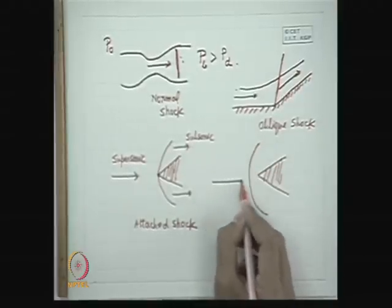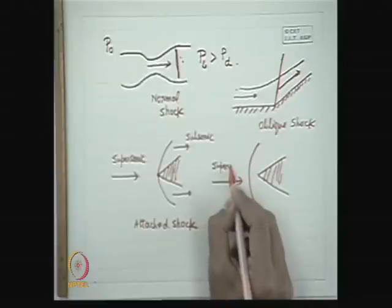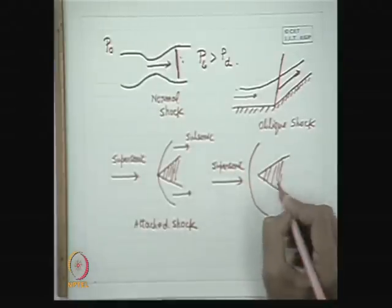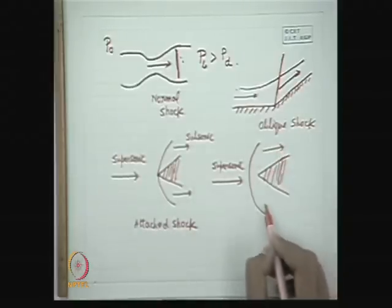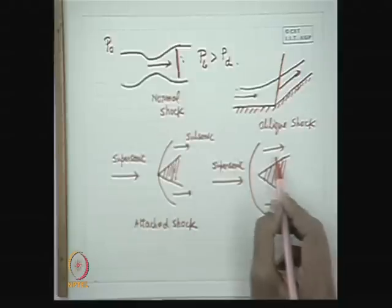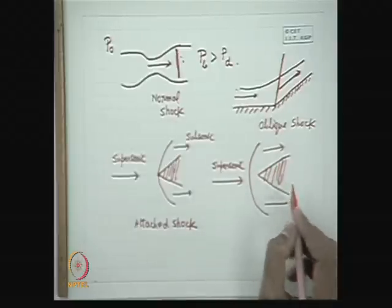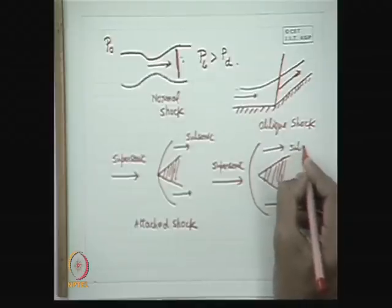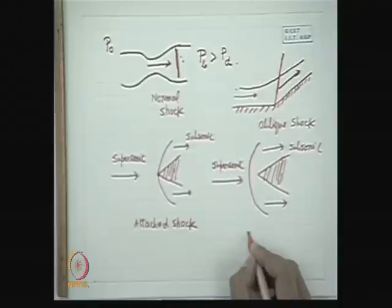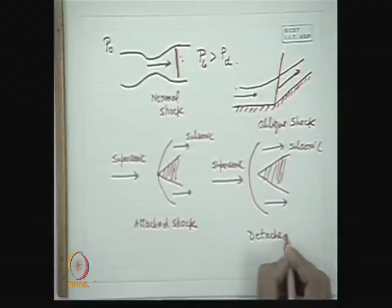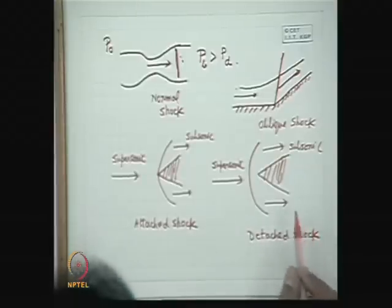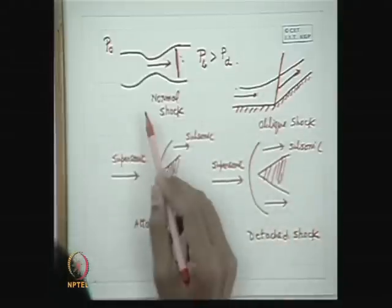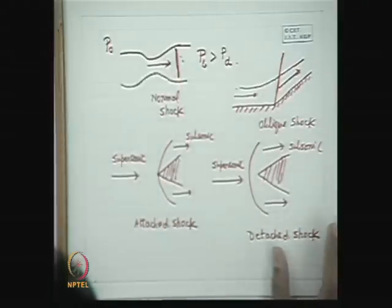Consider a wedge-shaped structure with supersonic flow approaching it. If the supersonic flow faces this type of obstacle, a shock occurs — a sudden discontinuity and jump from supersonic to subsonic flow, with an increase in pressure and decrease in velocity. This type of shock, where the shock front is not attached to the body, is known as a detached shock. These pictures show how a shock creates a sharp discontinuity in the flow field.